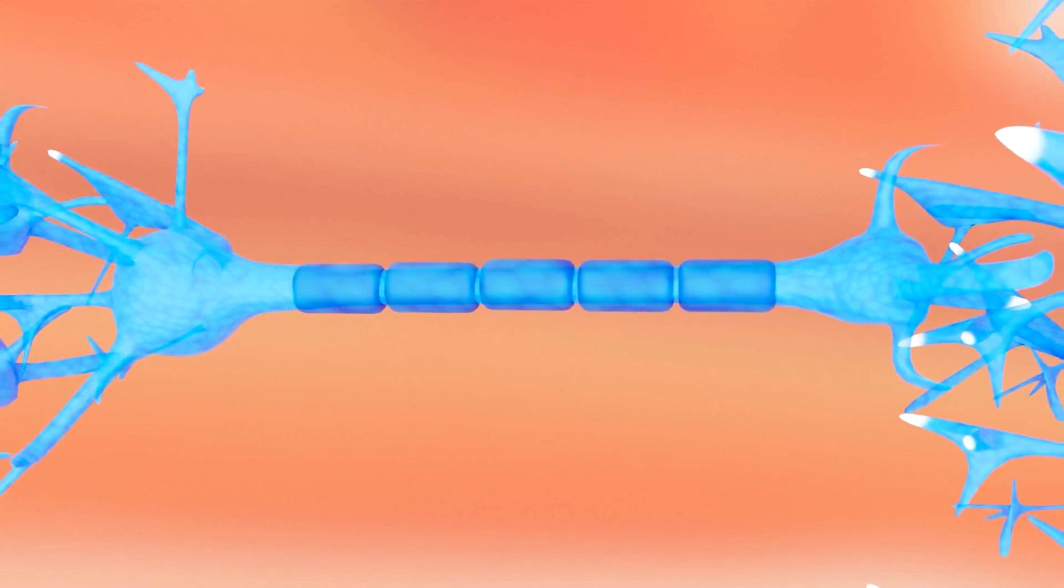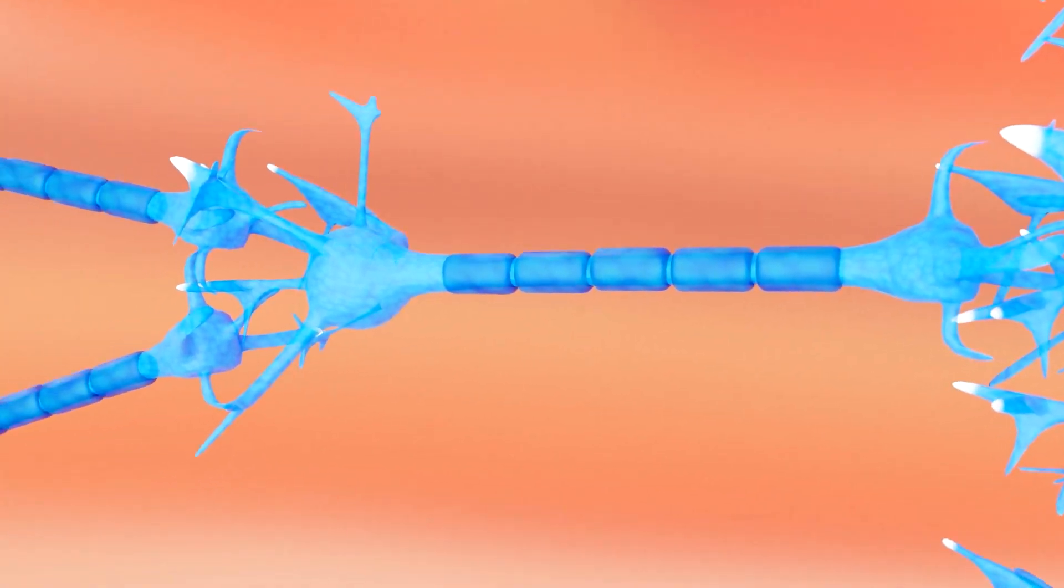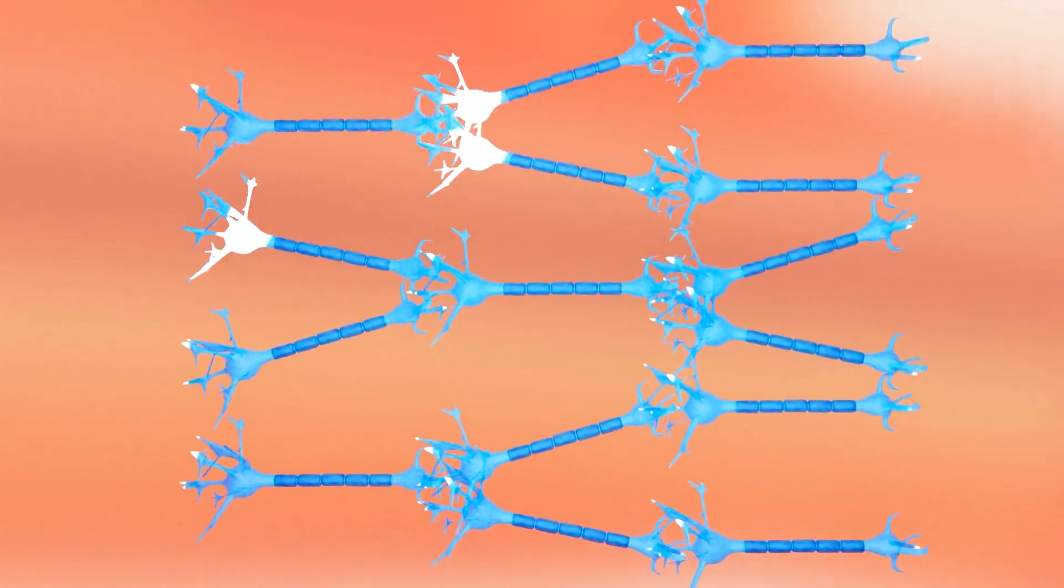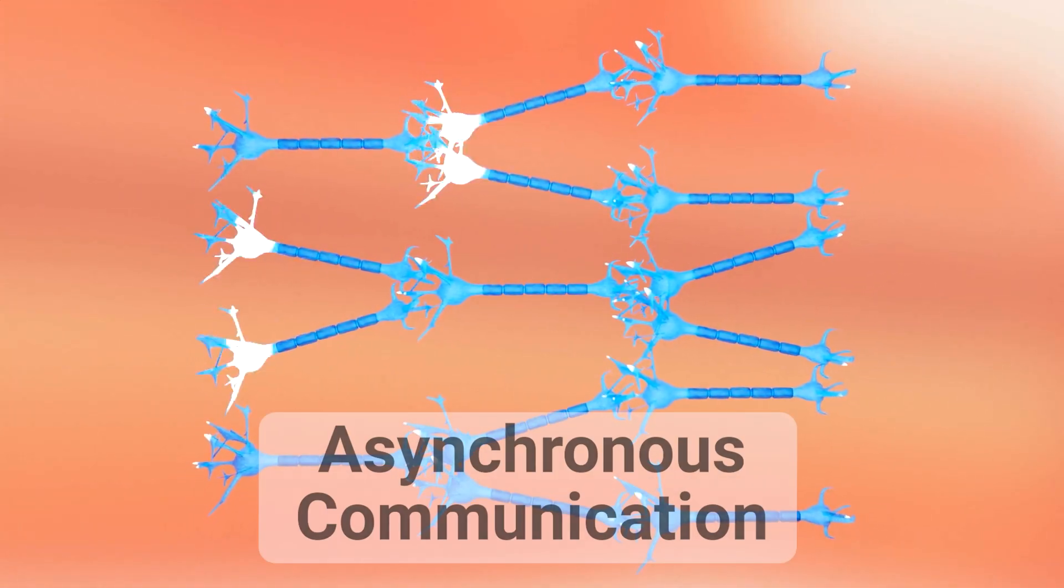Brains are built with neurons. They take in inputs in the form of spikes and can choose whether to send an outgoing spike to other neurons. Notice how neurons only spike as needed. This is called asynchronous communication.